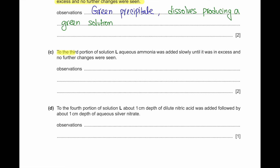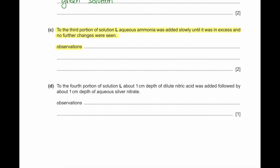Part C: To the third portion of solution L, aqueous ammonia was added slowly until in excess. Aqueous ammonia gives a grey-green precipitate; however, with aqueous ammonia the chromium(III) precipitate does not dissolve.